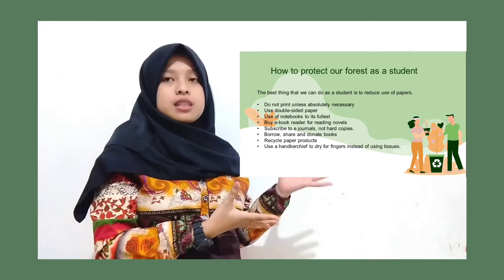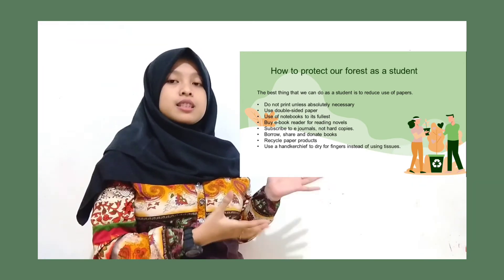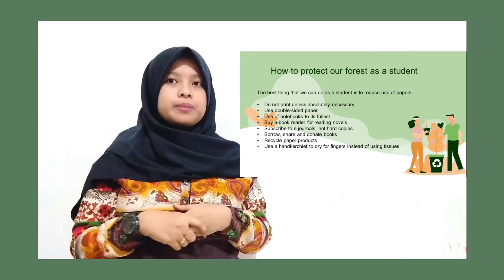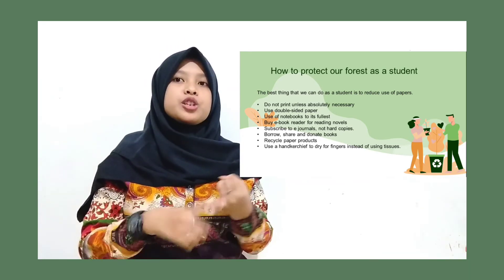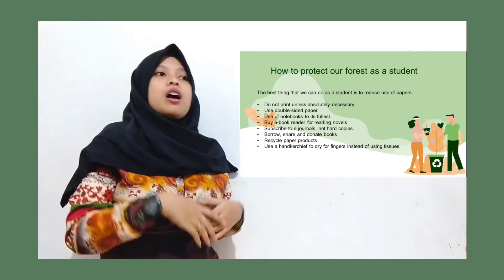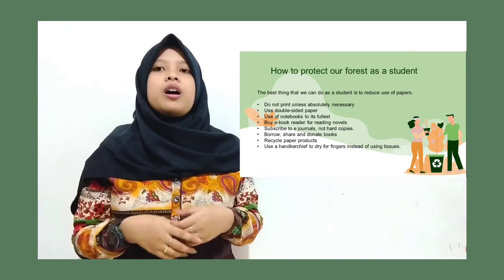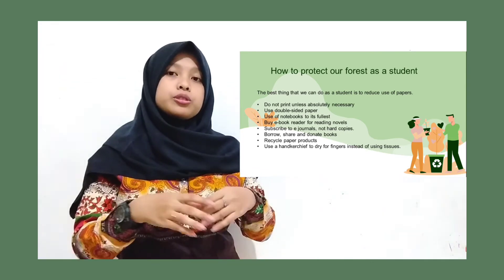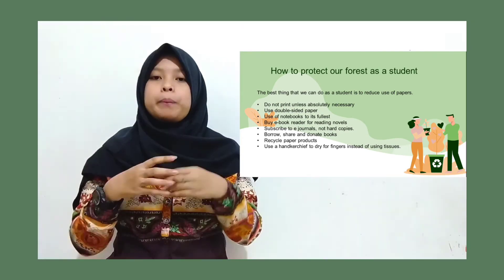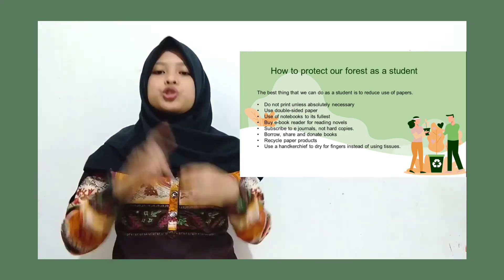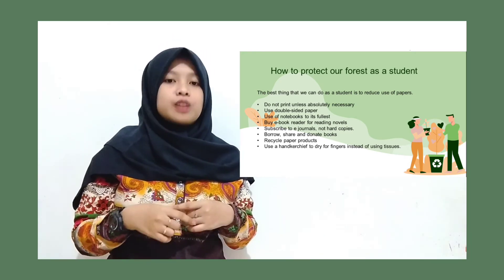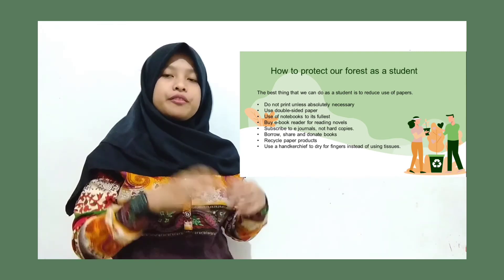Or maybe you can do these steps — little steps that may have a big effect in our world. For example, you can use double-sided paper, use a notebook to its fullest, or donate your old books that you no longer read. You can recycle your old books by giving them to a community that focuses on recycling paper. Every ton of paper that is recycled saves 17 trees, 1,100 kilowatts of electricity, 7,000 gallons of water, and 90 cubic feet of landfill space.